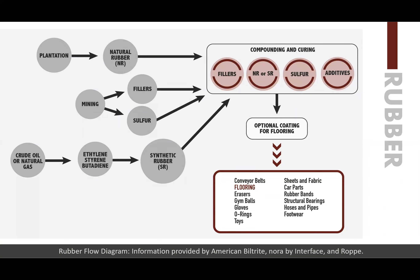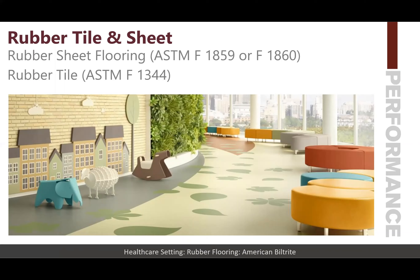The ASTM standards utilized are rubber sheet flooring ASTM F1859 and F1860. The difference is that F1859 is rubber flooring without backing and F1860 is with backing.